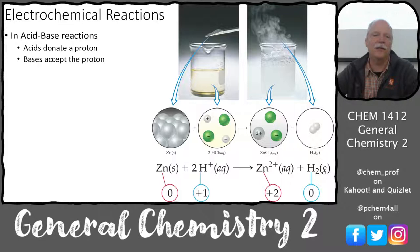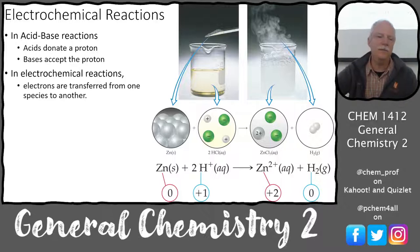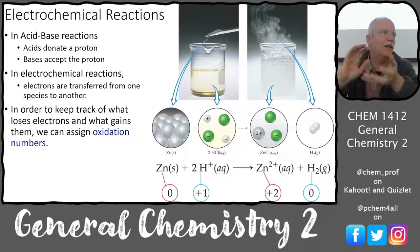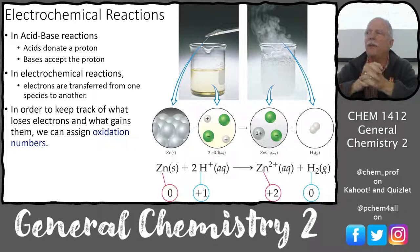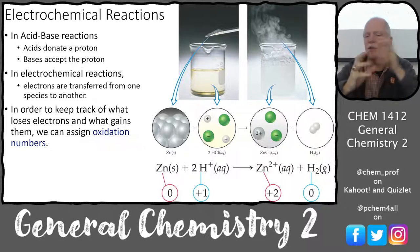In acid-base reactions, acids donate protons and bases accept protons. But in electrochemical reactions, electrons are transferred from one species to another. In order to keep track of what loses electrons and what gains electrons, we can assign oxidation numbers. You don't have to use oxidation numbers — you can balance these equations without them — but it really is helpful if you understand how to compute them. So we'll start with that.